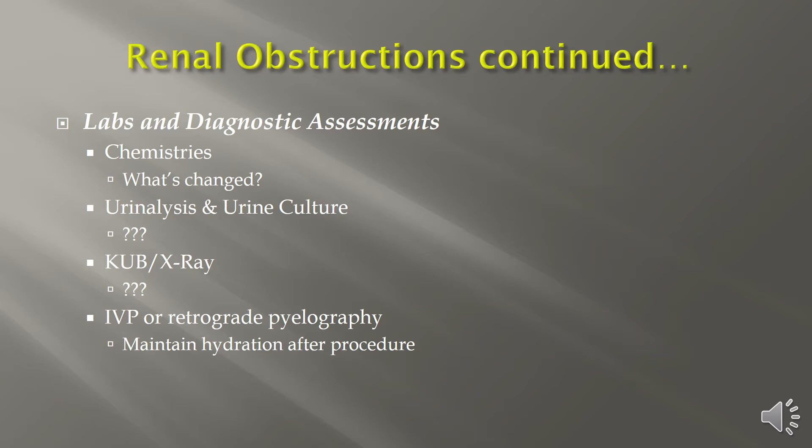In looking at kidney function tests, BUN and creatinine are the focus — we watch to see if they become elevated, giving us an idea of hydration status and how the condition is affecting the kidneys themselves. A urinalysis is used to check for red blood cells in the urine or crystals being eliminated in the urine. A urine culture may also be done to see if an infection is the cause of the stone.